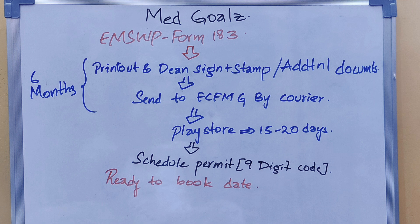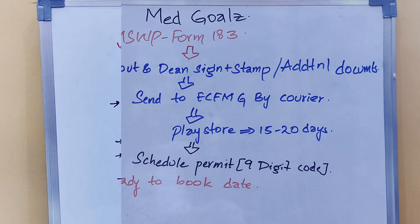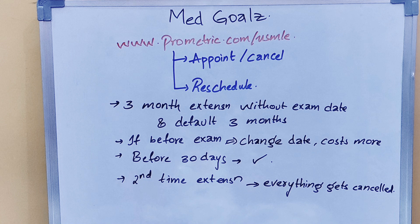After that, you will receive a scheduling permit, which is a 9-digit code, and then you are ready to book a date. For booking, go to the Prometric site where you can book your date, cancel, or reschedule. A 3-month extension without choosing an exam date costs around $90.